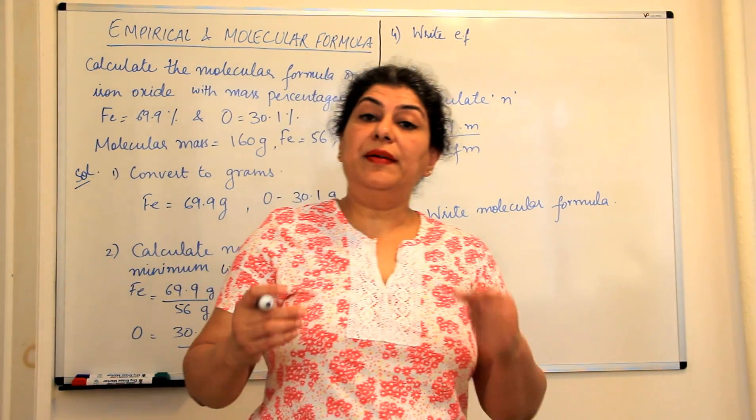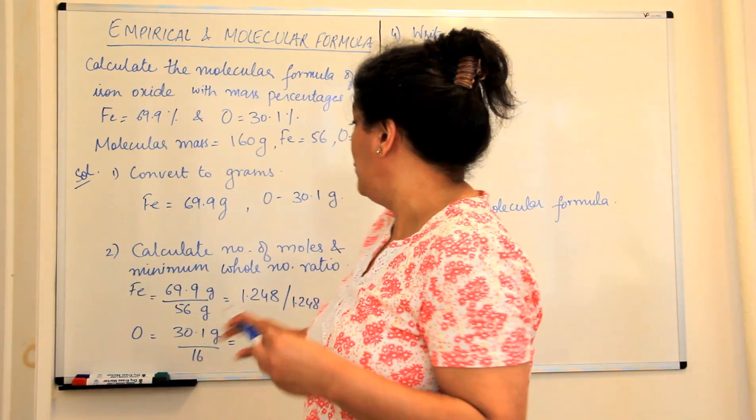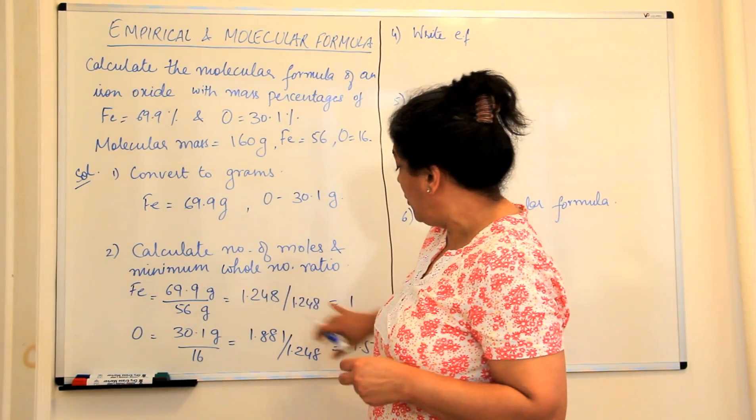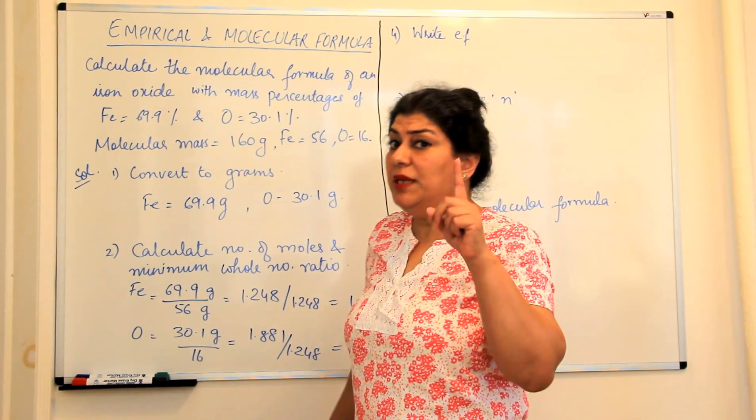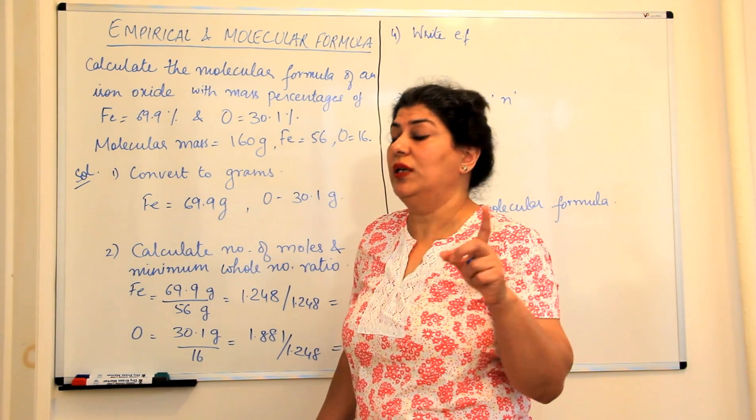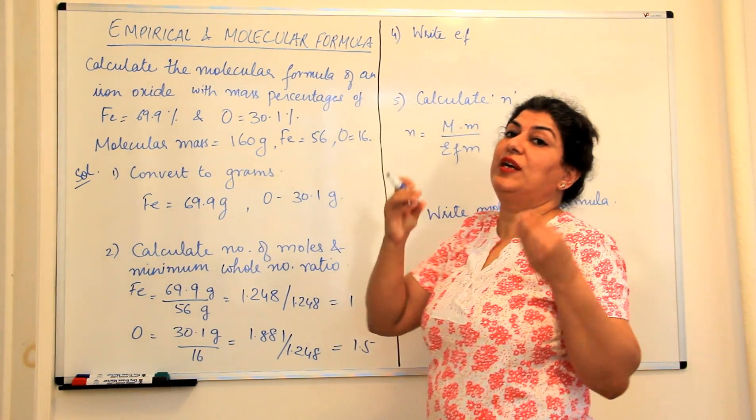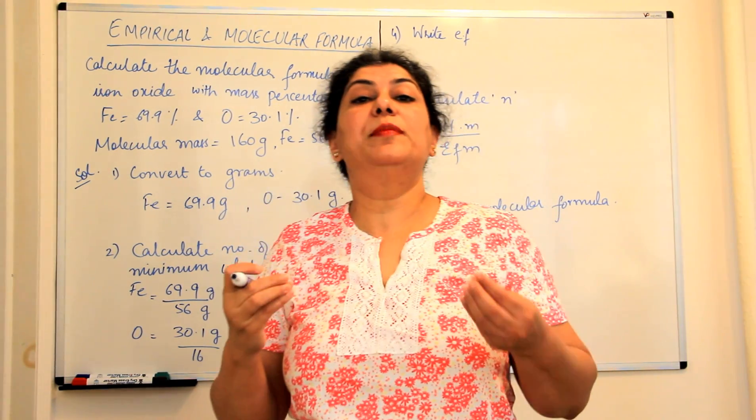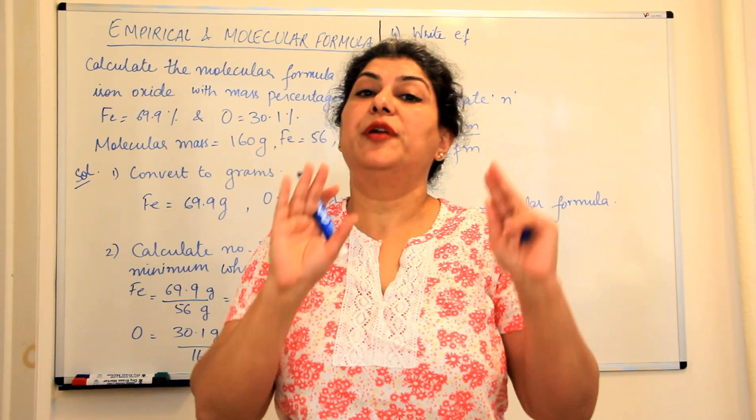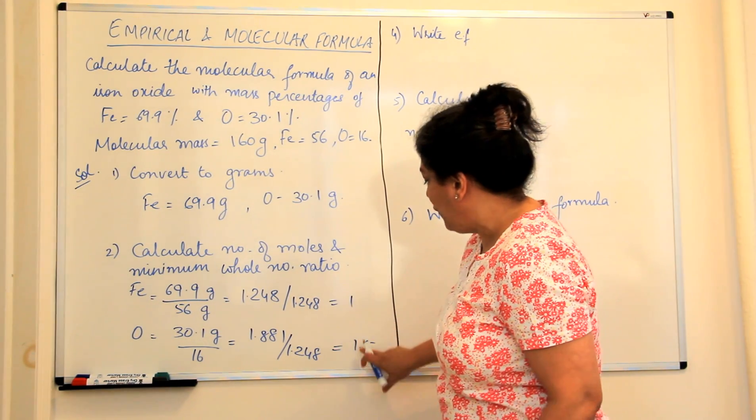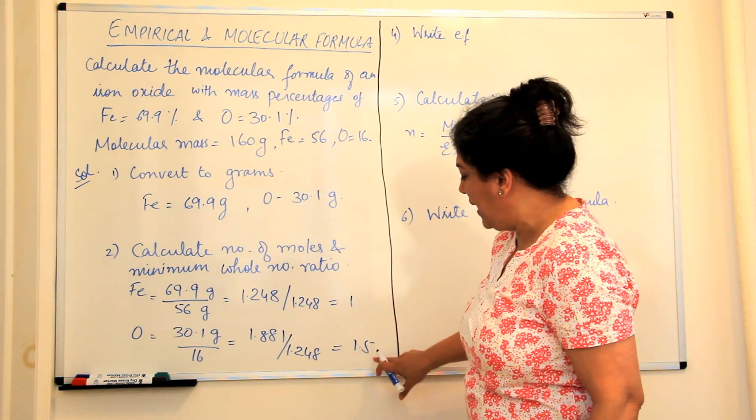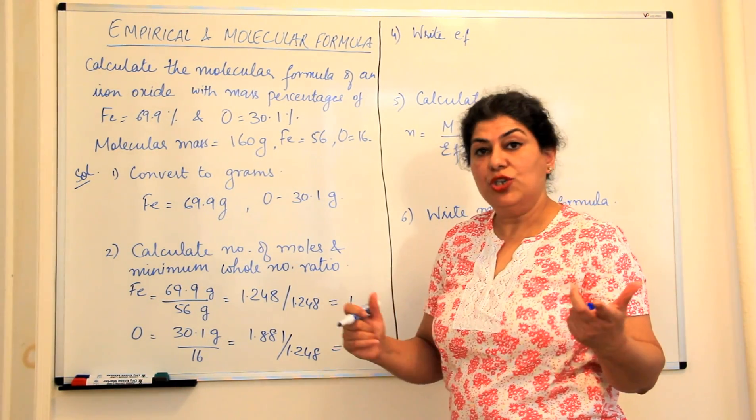Now empirical formula is the formula which is what we had to do was we had to find out the minimum ratio but the minimum ratio should have been a whole number ratio because empirical formula is the formula of the compound in which all the elements are written in their minimum ratio, minimum whole number ratios. So in order to find the minimum whole number ratio, we have to multiply both of these by 2.